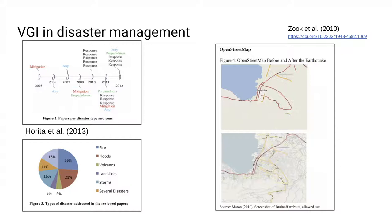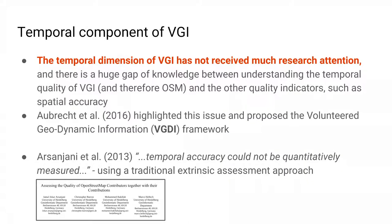Several papers stress the timeliness of VGI and how useful it can be. But if we look at the VGI literature as a whole, we can see that the temporal dimension of VGI has not received much research attention. There is a huge gap of knowledge between understanding the temporal dynamics of VGI and other quality indicators such as spatial accuracy. When it comes to OpenStreetMap, we know a lot about the spatial accuracy of map features, but this is not true for the temporal component.